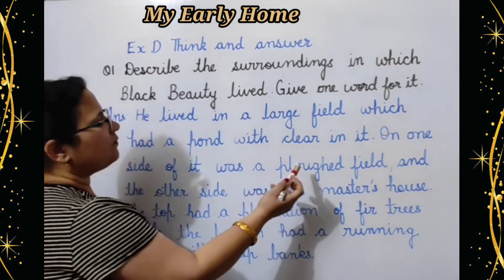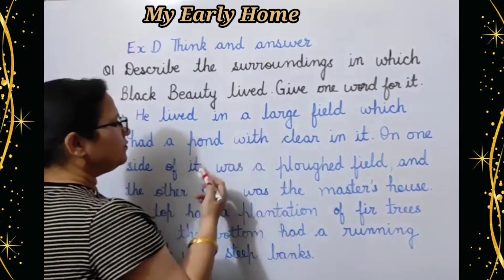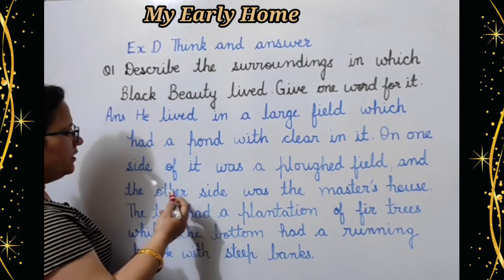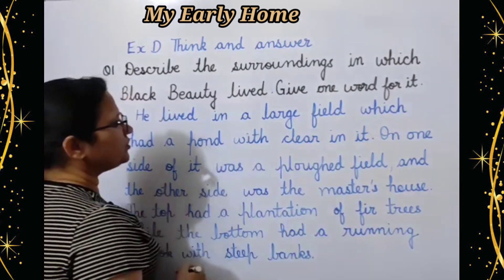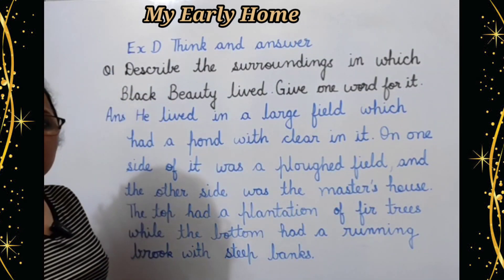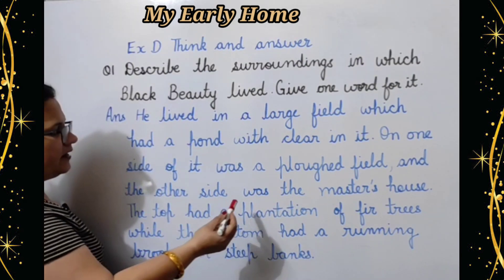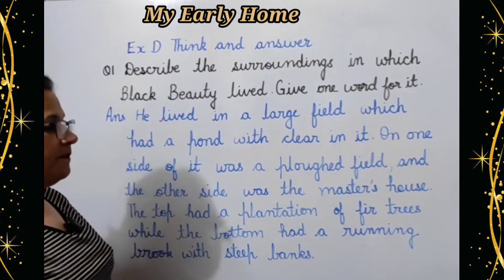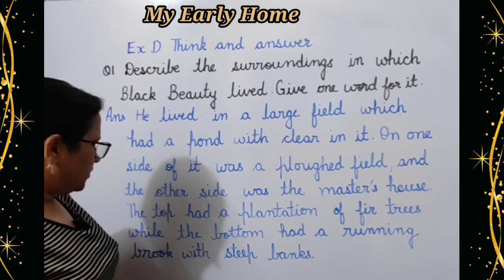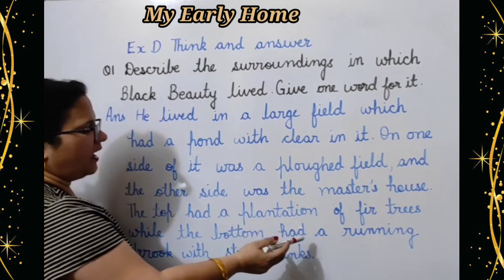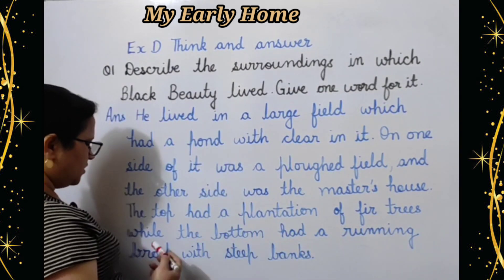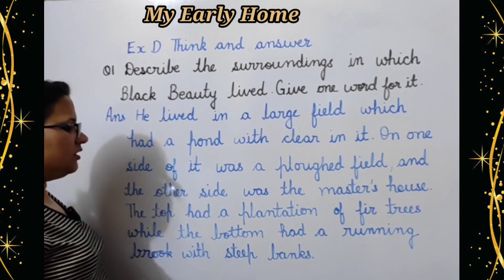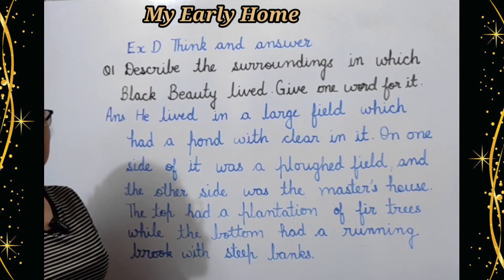On one side of it was a ploughed field — aur uske ek taraf jute huwe khet the yani jahaan kheti hoti thi. And the other side was the master's house — aur dooseri taraf uske malik ka ghar tha. The top had a plantation of fir trees — devadar ke vrikshon ka khet tha. While the bottom had a running brook with steep banks — behti hoi nadi thi jiske kinare gehere the.